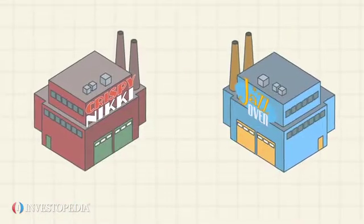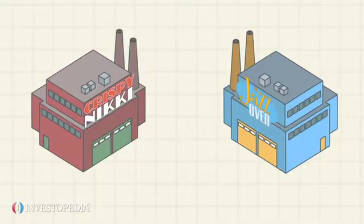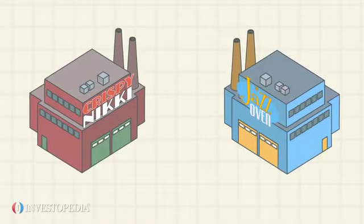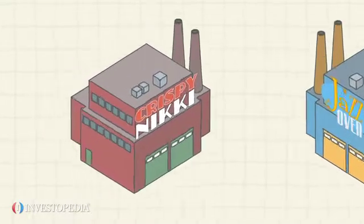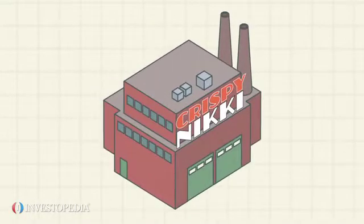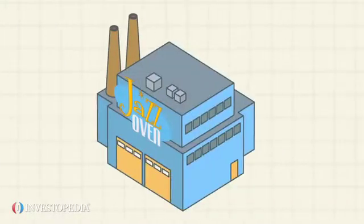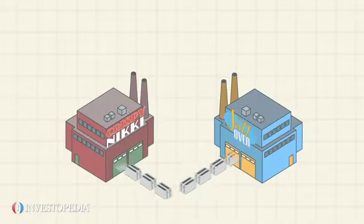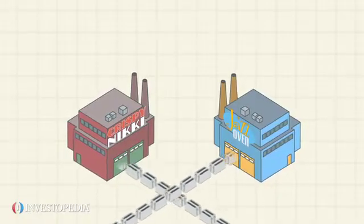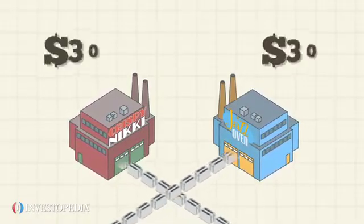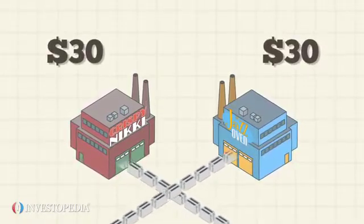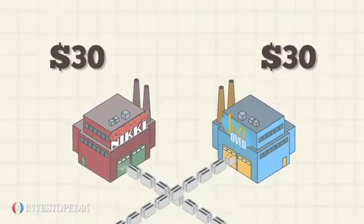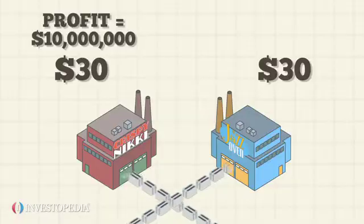Imagine that two manufacturers dominate the toaster industry. Both Crispy Nicky and Jazz Oven make 1 million toasters a year for a price of $30 each and earn a profit of $10 million annually.